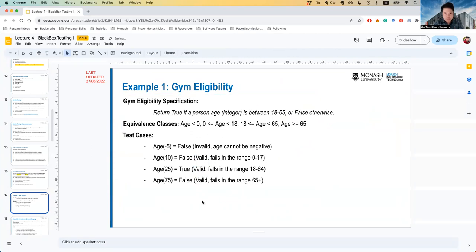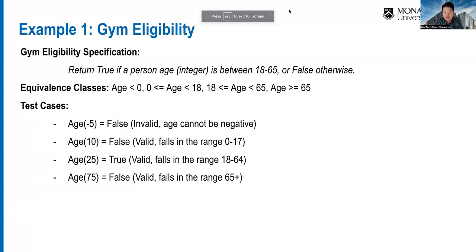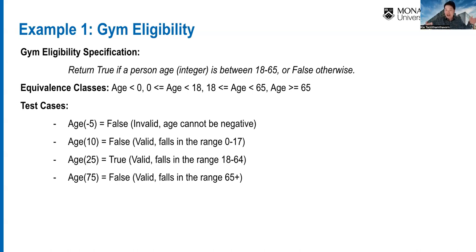Next example: David Jones discount campaign. The specification: return 5% discount for purchases over $100, 10% for over $200, 20% for over $500, and 0% otherwise. The input domain is the purchase amount. We partition it into five classes: below zero (invalid), $0–$100, $100–$200, $200–$500, and over $500. Then we select one test case per class.